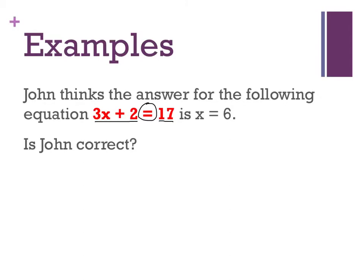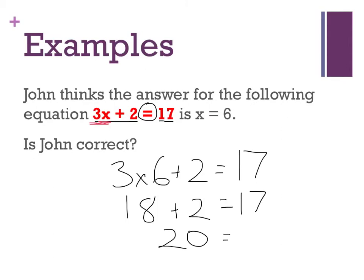It's 3x plus 2. John thinks x equals 6, so I'm going to substitute 6 into my equation. I know that's saying 3 times x, so it'll be 3 times 6 plus 2 equals 17. Okay, I'll do it one step at a time. 3 times 6 is 18 plus 2 equals 17. 18 plus 2 is 20 equals 17.